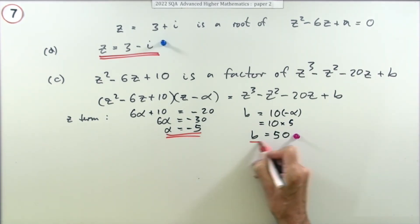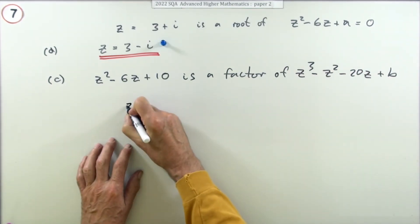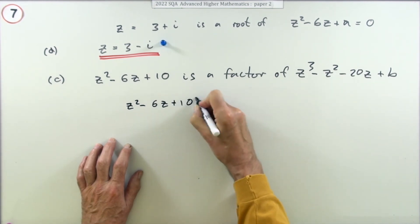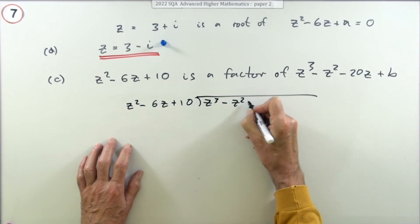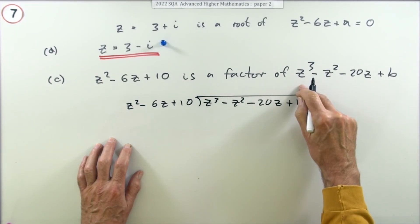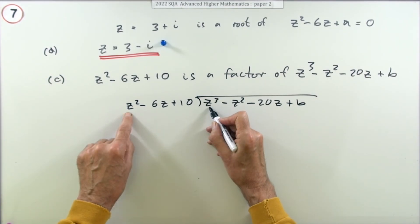It took a bit of doing for just the one mark. The alternative would be to divide it in. I'll do that. So if you divide this into this one, z cubed minus z squared minus 20z plus b, it should go in exactly with that linear factor plus a remainder of zero. Right, well to make a z cubed I just need to multiply by z. So it'll be z cubed minus 6 lots of z squared plus 10z.